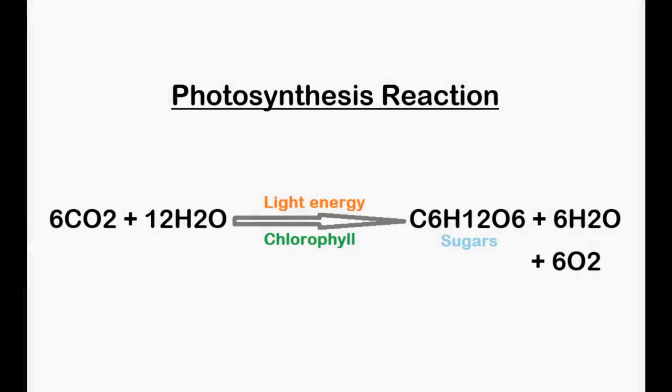Gaseous oxygen is a major byproduct of the process of photosynthesis. The chemical reactions that take place in this process may be summarized as follows.